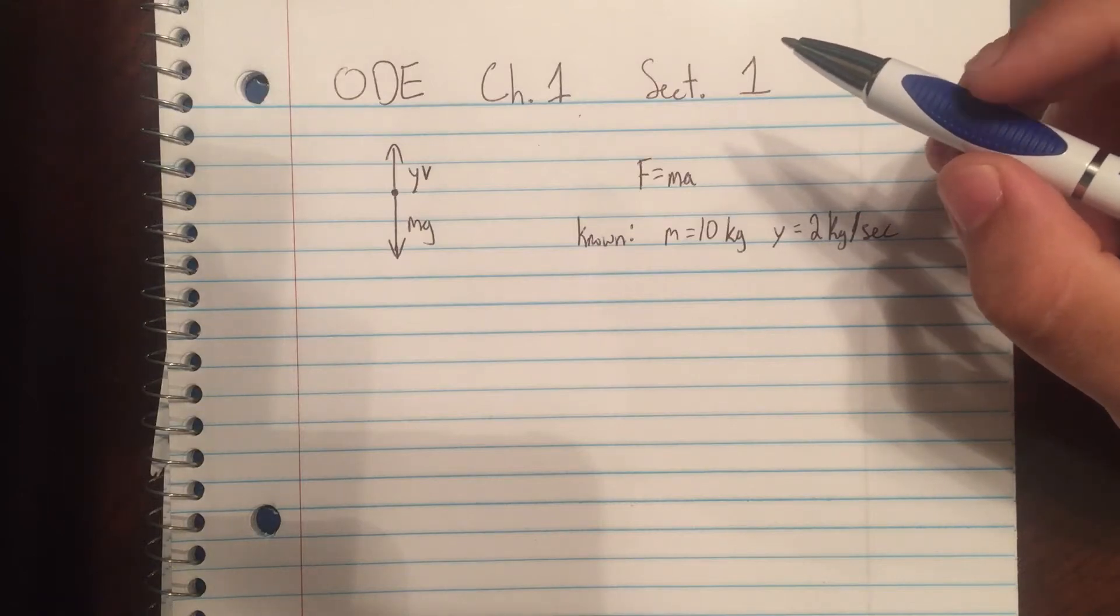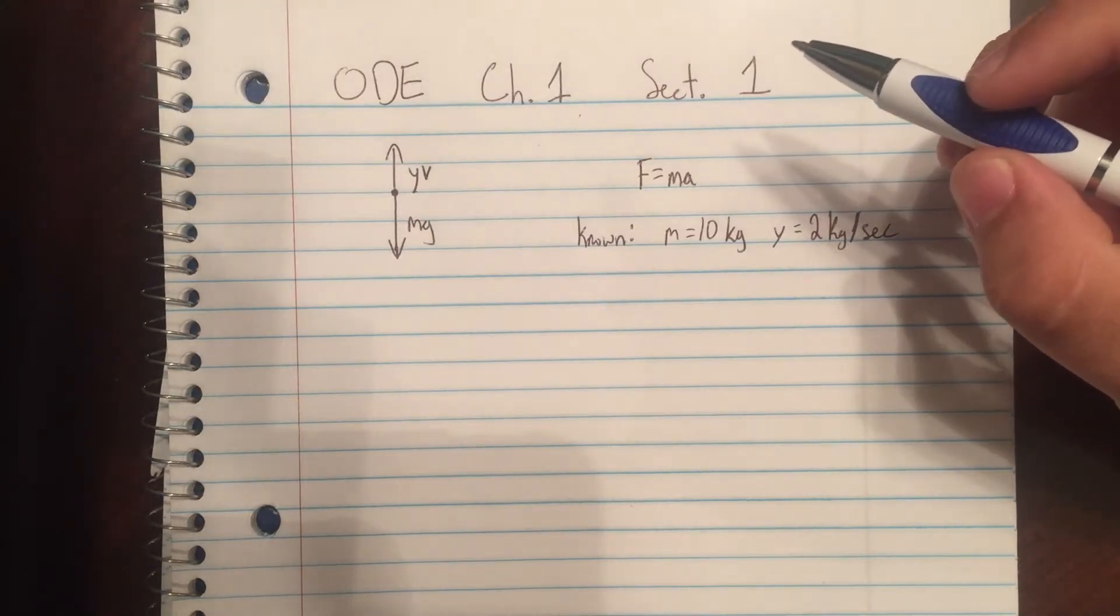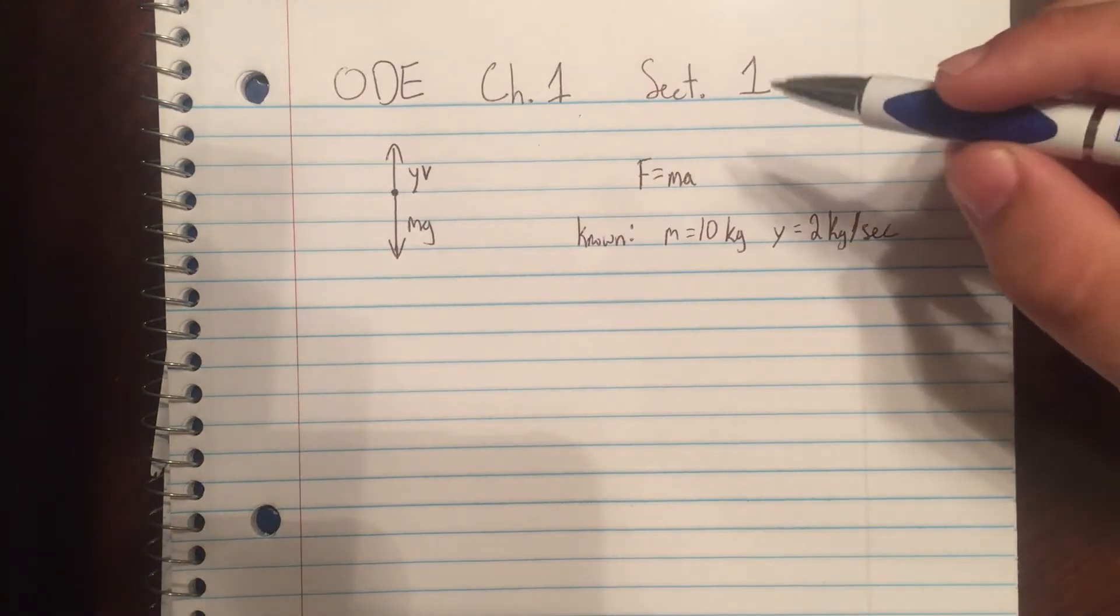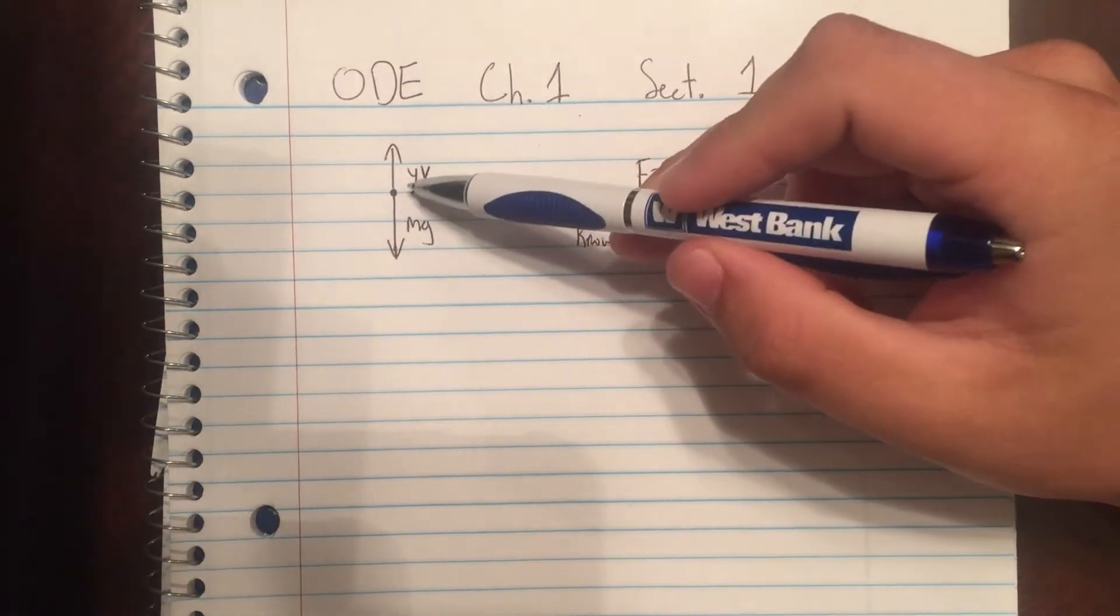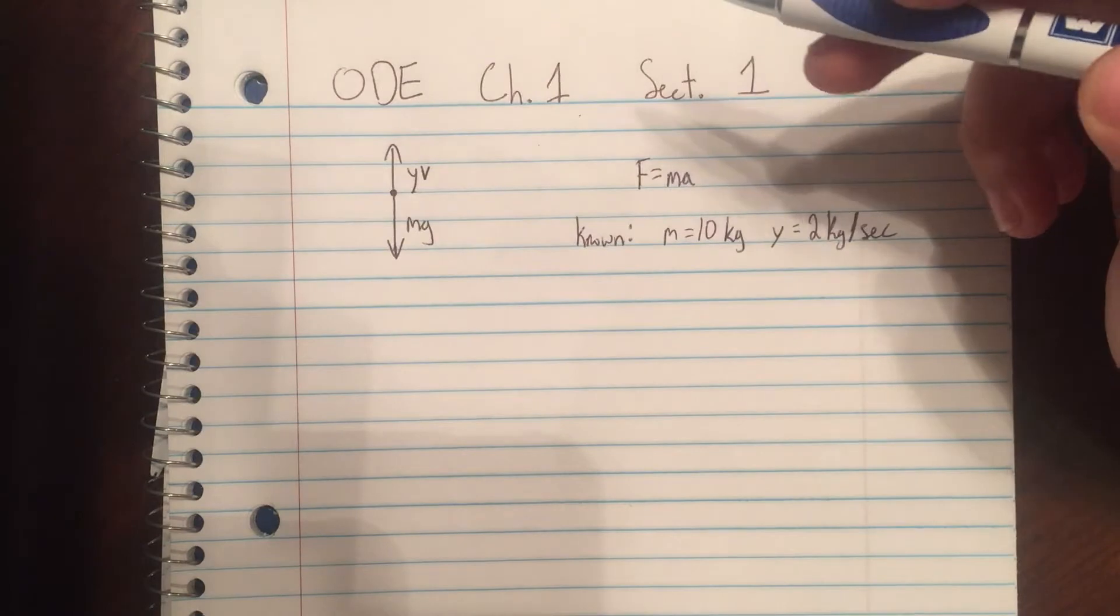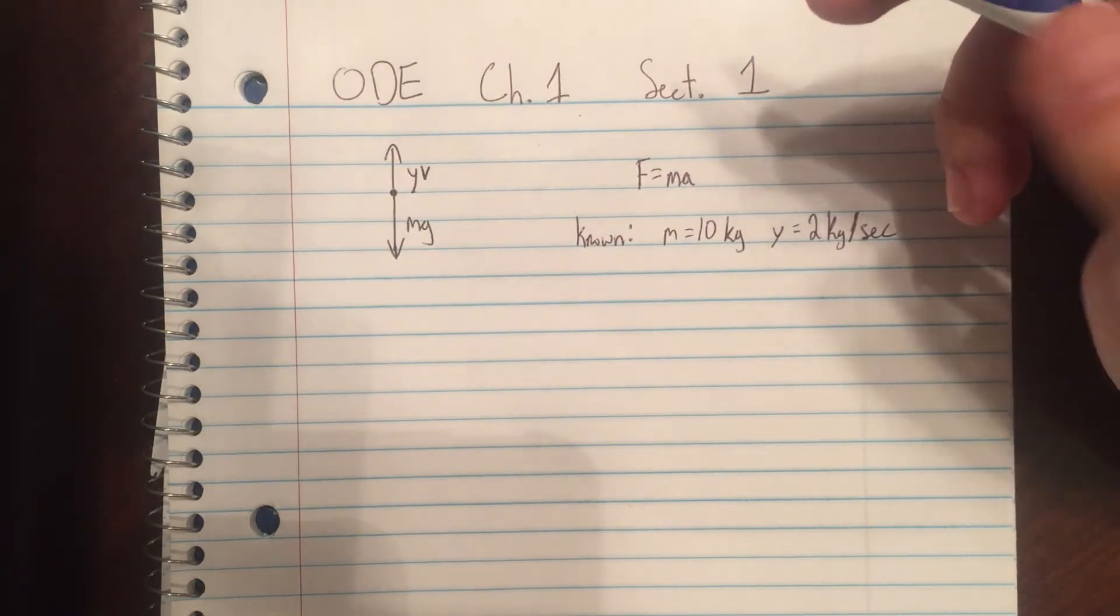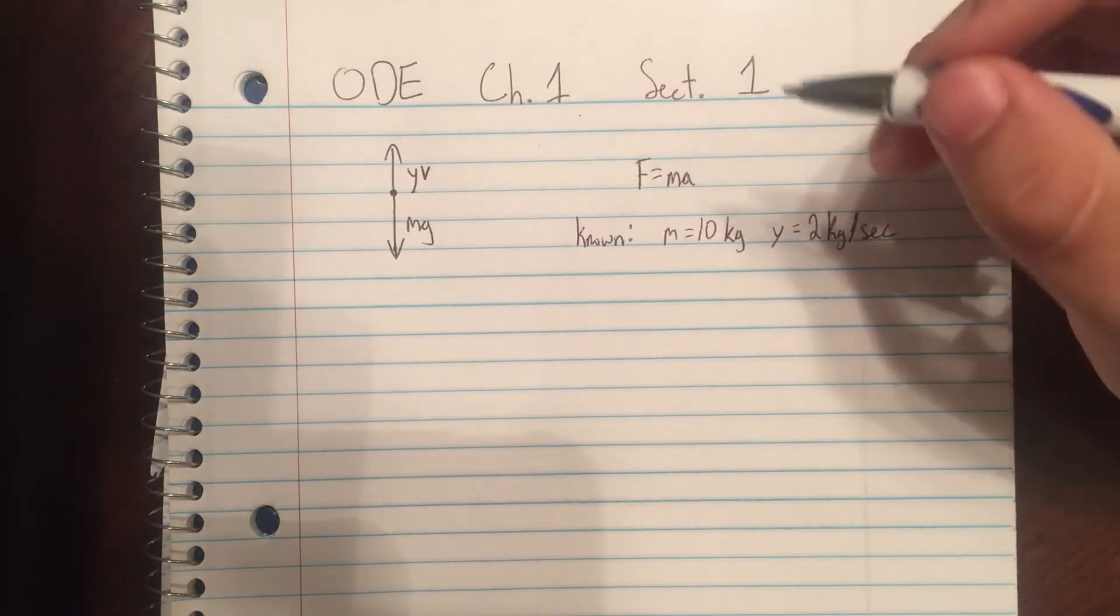Welcome to Differential Equations, Chapter 1, Section 1. In this problem set, we have an object falling. We're trying to find the total force acted on it and the maximum velocity it will have.